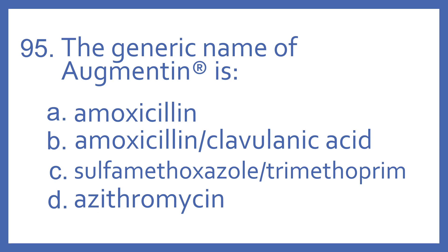Number 95. The generic name of Augmentin is: A. Amoxicillin, B. Amoxicillin with clavulanic acid, C. Sulfamethoxazole with trimethoprim, or D. Azithromycin.